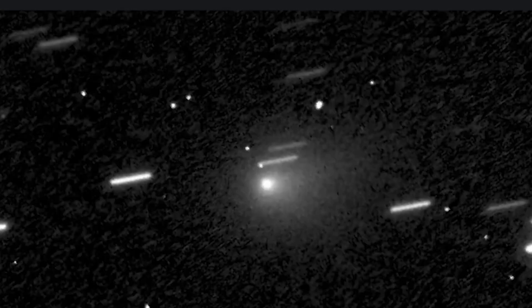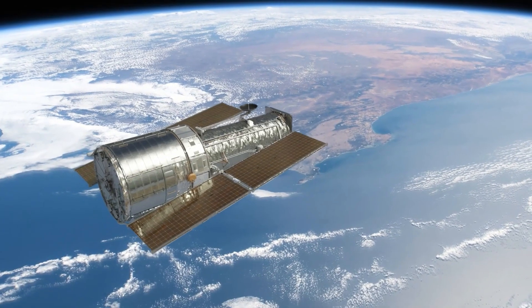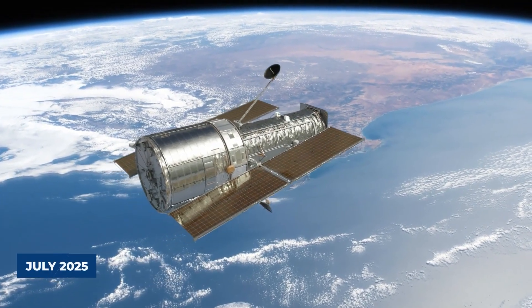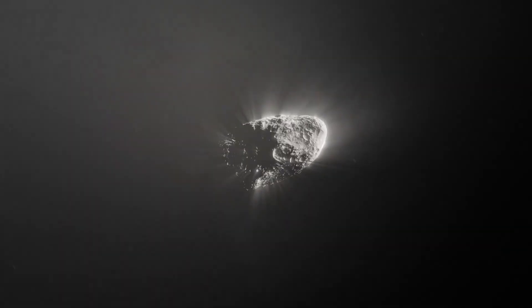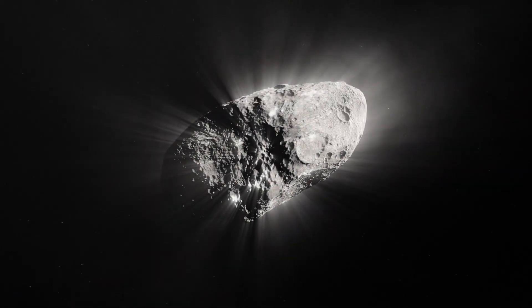The size of 3I Atlas added another layer of intrigue. Early observations by NASA's Hubble Space Telescope in July 2025 revealed a teardrop-shaped cloud of dust, or coma, surrounding its nucleus. Estimates for the comet's solid, icy core ranged from a quarter of a mile to three and a half miles in diameter.